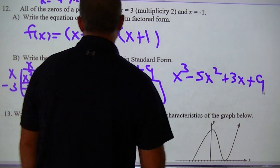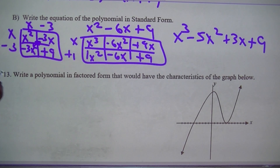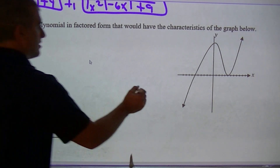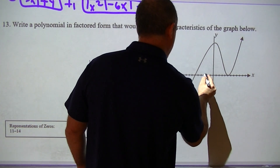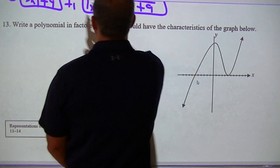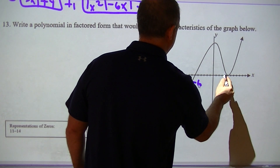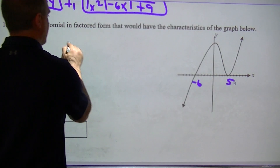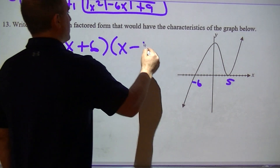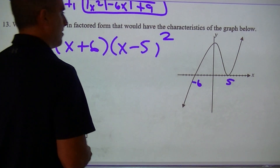Write the polynomial that has the following factored form. It crosses at 1, 2, 3, 4, 5, 6 — and this is 1, 2, 3, 4, 5. So what I would have there is (x plus 6). Since it turns at that point, I would put squared: (x plus 6) squared, and that's what I have for that one.